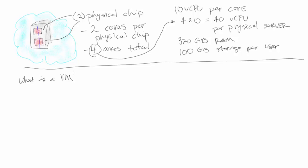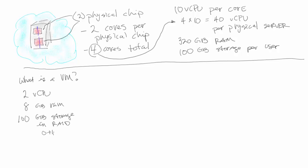Let's do some of the math. The first thing we have to define is what the virtual machine is made of — remember, all virtual machines are not alike, just like physical servers. Here let's define that we have two virtual CPUs per machine, eight gigabytes of RAM, and 100 gigabytes in a RAID 0+1 — so 100 gigabytes usable.